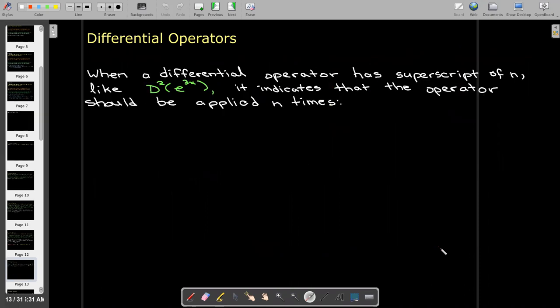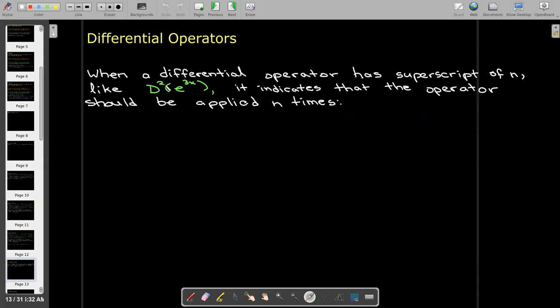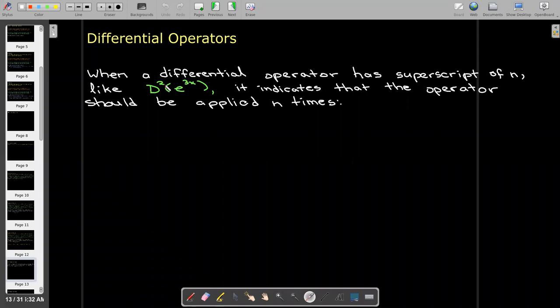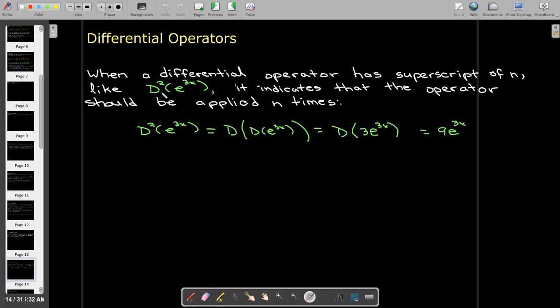If we put a superscript on an operator, that just means to apply that operator that number of times. So if I have D squared of e to the 3x, that means apply that D operator. In other words, take the derivative of e to the 3x, get an output, and then take the derivative again. In other words, we're taking the second derivative.